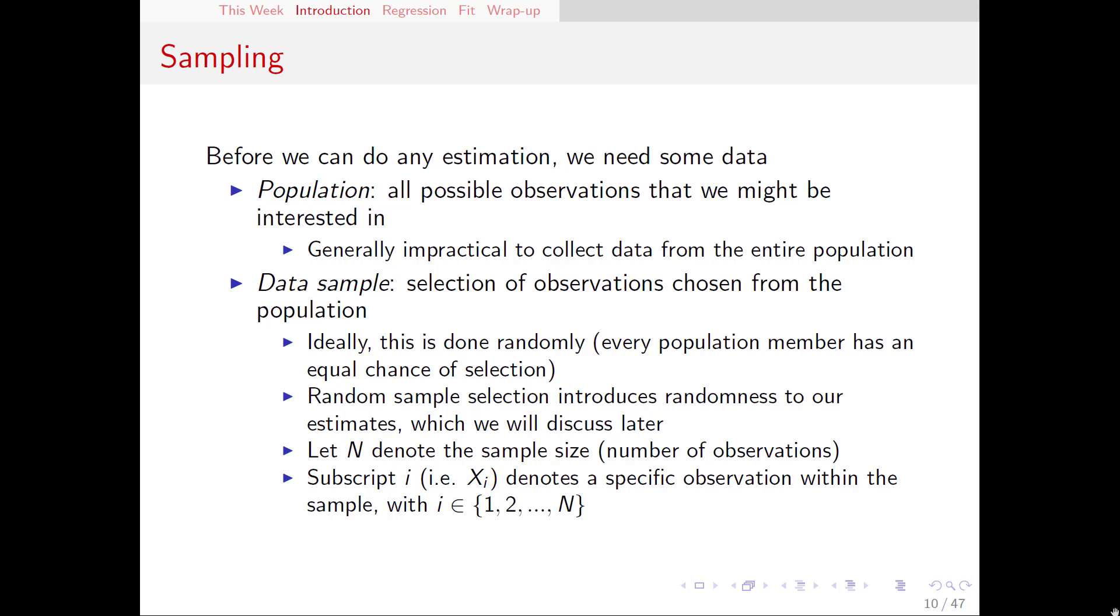But if I have a subscript on the x, I'm talking about a specific observation within our sample. The subscript i denotes a specific observation. So if we have a total of N members of the sample, i could be member 1, member 2, member 3, all the way out to N.